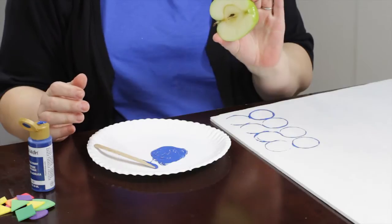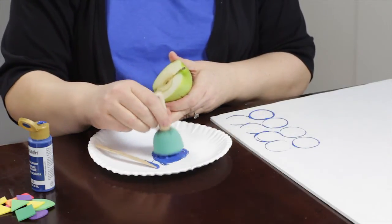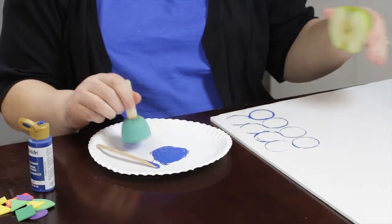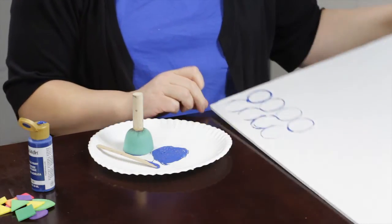Another thing that you can use is lots of fruits and vegetables. These apples make kind of interesting stamps. Now when you dip something in you tend to get a little bit of blobs and things like that on it.